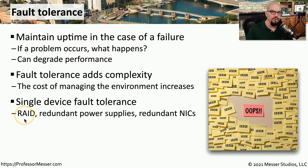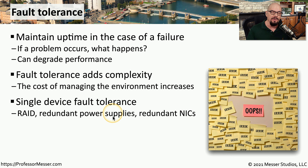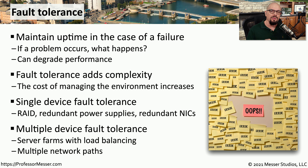Sometimes this fault tolerance can exist in a single system. For example, you might have a RAID array so that if you lose one drive, an additional drive is there to maintain the uptime and availability of the data. Maybe in a single server you have redundant power supplies, so if you lose one power supply, you have a fault-tolerant supply to use instead. Or perhaps you have redundant network interface cards so that if you lose one network connection, you always have another network to rely on.